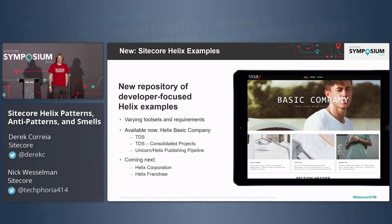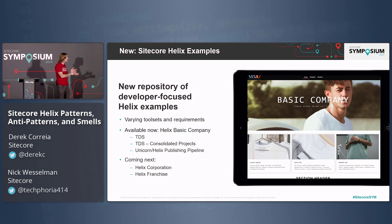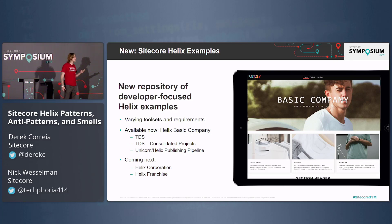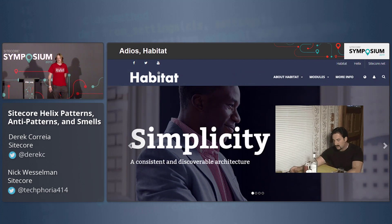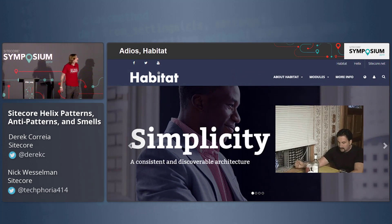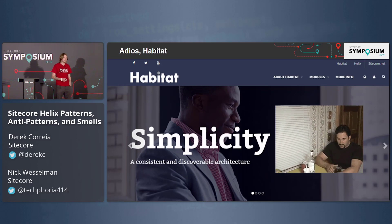Along with the doc changes, we now have a new repository of Helix examples. Long-term, this will replace Habitat entirely in the Helix documentation. The idea is to have a collection of examples with varying tool sets and requirements that show you that Helix needs to be applied appropriately to a particular set of requirements and can be applied with different tool sets. The first release includes one site called Helix Basic Company, implemented three times: once with TDS, once with Unicorn, and once with TDS with some project consolidation. We have a couple of other sites in the backlog that will eventually replace all of Habitat in the Helix docs.